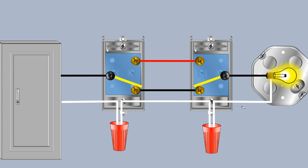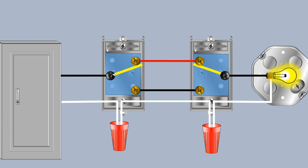Now what happens if we flick the second switch? We leave the first in the down position and flick our second switch to the up position. Immediately, the path for current is interrupted again — open circuit means the load is de-energized and the light bulb is off. If we go back and flick the first switch back up, now both switches are in the up position, which means we have an established path for current back to our supply, the load is energized, and the light bulb is on.